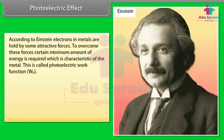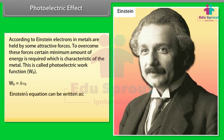According to Einstein, electrons in metals are held by attractive forces, and a minimum energy called the photoelectric work function W₀ is required to overcome these forces: W₀ = hν₀. Einstein's equation is written as hν = hν₀ + KE, so KE = hν − hν₀.